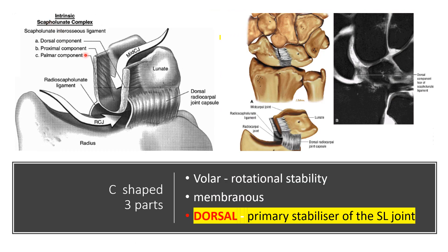The scapholunate ligament is a C-shaped ligament which has three parts: a very thick dorsal component, which is the most important part of the ligament and is the primary stabiliser for the scapholunate joint; a thin volar component; and a membranous part. The membranous part plays very little significance, and the volar component is an important rotational stabiliser of the wrist.